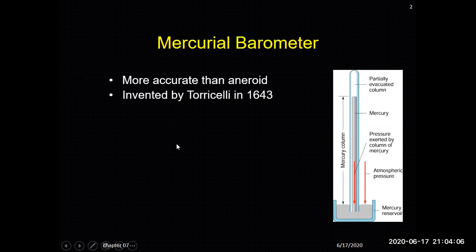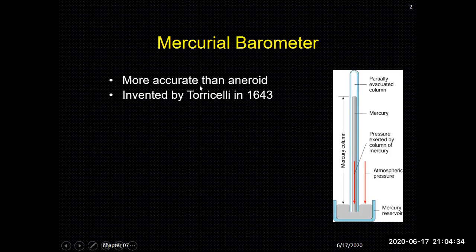We will discuss during this class the reason why we can't fill air inside the tube, and what happens if we fill water instead of mercury as the source for measuring pressure. This explains why we use mercury — it has some benefits and is more accurate than using other substances like water.